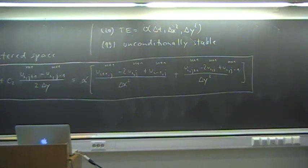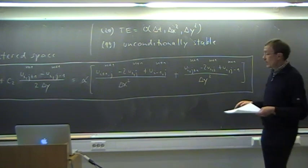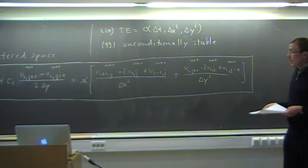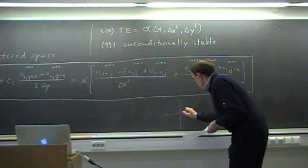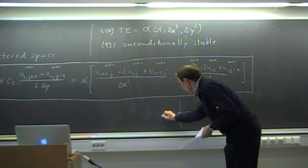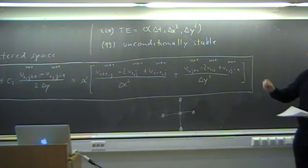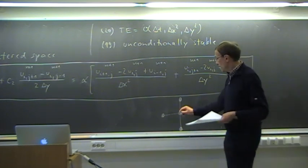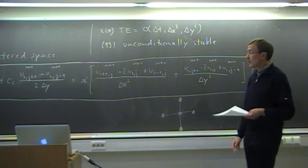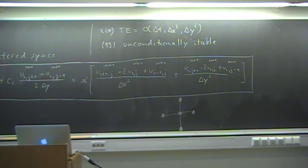We have used the same space discretization, which is centered for the advection and centered for the diffusion — second order in x and y. So it's a second-order scheme in space. A nice feature of this method, as I mentioned, is that this scheme is unconditionally stable. However, we have to pay a price for that: this scheme leads to a linear system that we have to solve in each time step. The type of matrix is similar to what we discussed for the Poisson equation — a pentadiagonal matrix with five diagonals.